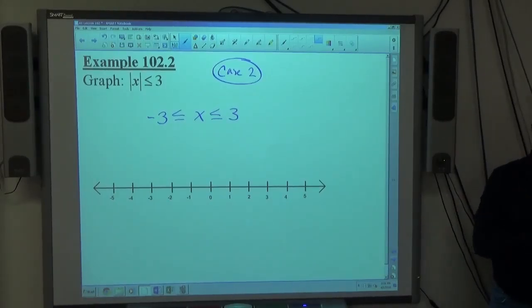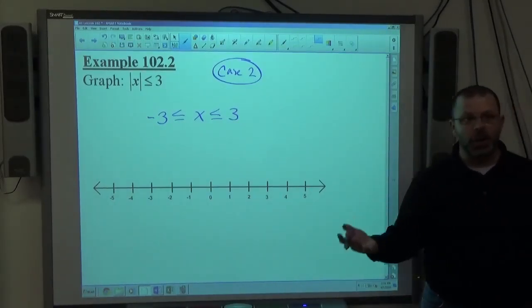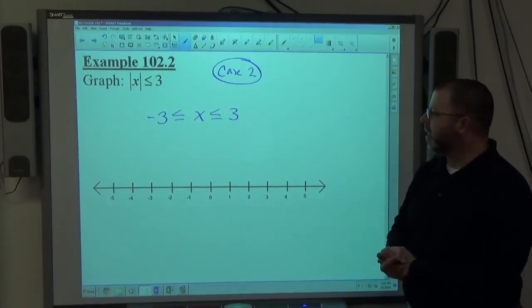We're getting the absolute value bars out of the problem. We're creating a conjunction this time, a compound inequality.